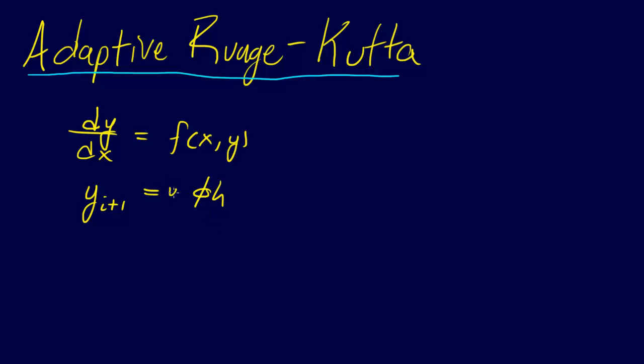Well, excuse me, y_i plus some phi times h. So you have where you're at and then you move along some slope. So that's great, except we have sort of a problem here.